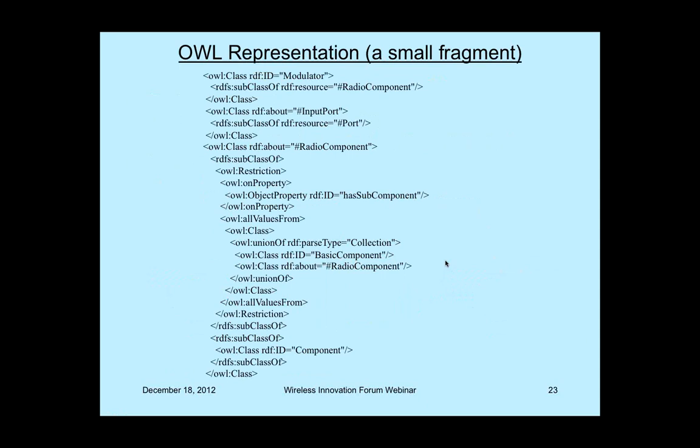Pictures need to be represented in a formal language. This is a snapshot of a very small piece of an ontology — a representation of classes and subclasses in OWL — just to give a taste of what it looks like.